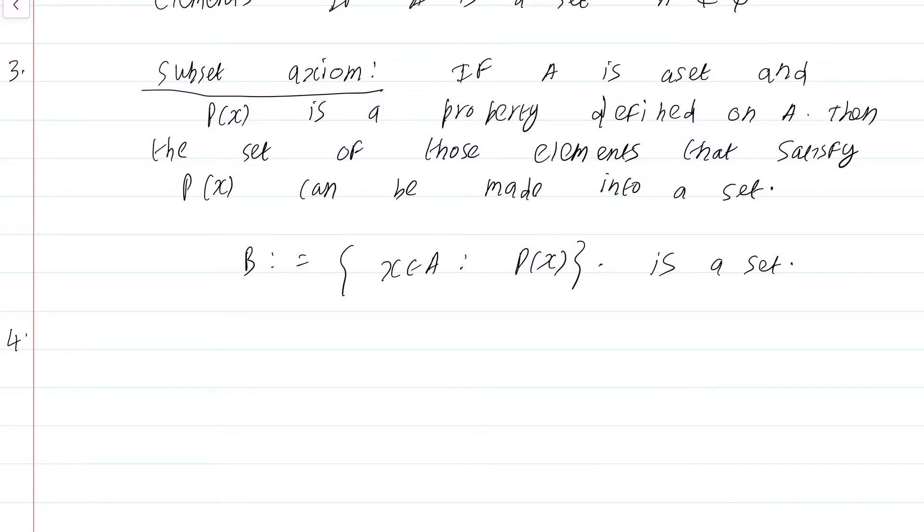So, most sets that we define we are essentially using the subset axiom and the undefined term property to define them. For instance, the definition of odd numbers, even numbers, prime numbers that we have already seen. The next axiom is vitally important especially for this course because this course at the end of the day is about functions. This is the pairing axiom.